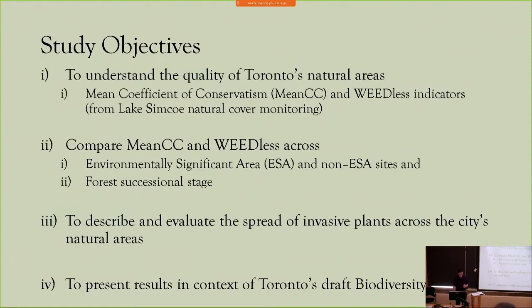The broad objective of my study was to understand the quality of Toronto's natural areas. I do this by assessing the vegetation composition using mean coefficient of conservatism, or mean CC, and weedless indicators — an approach taken from a similar project done in the Lake Simcoe watershed.